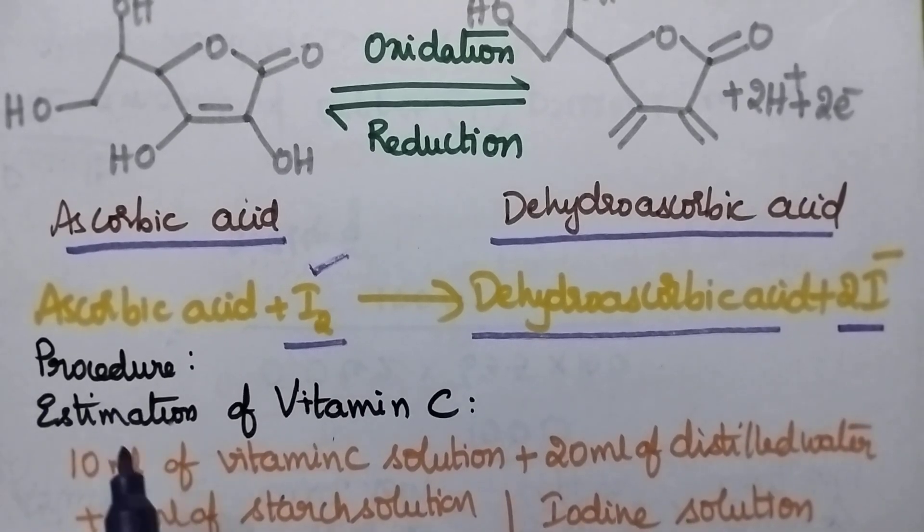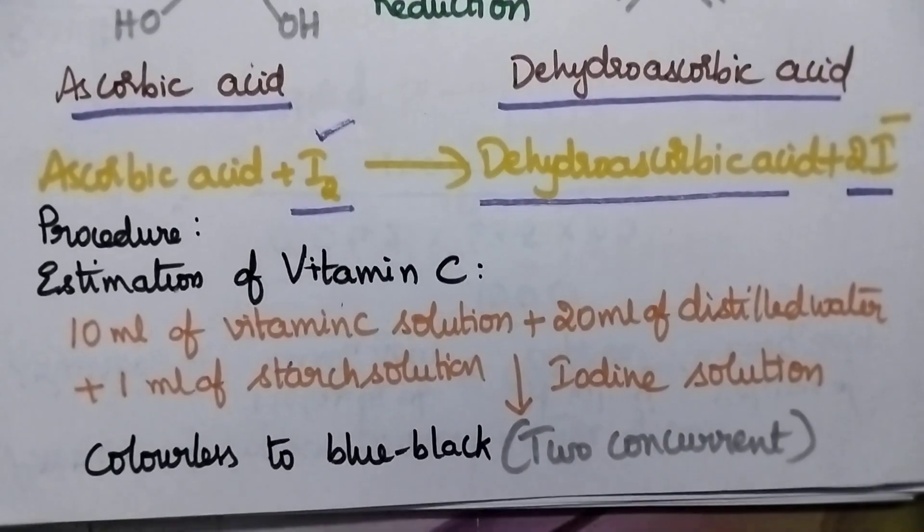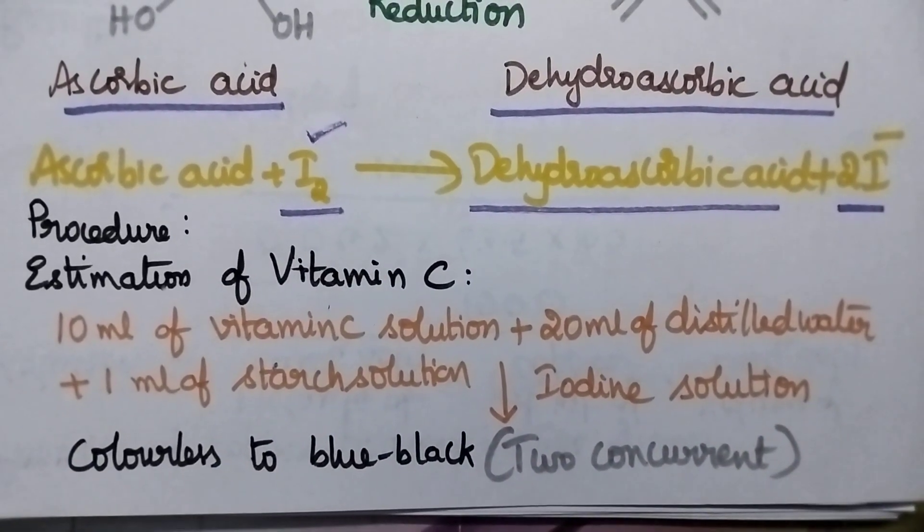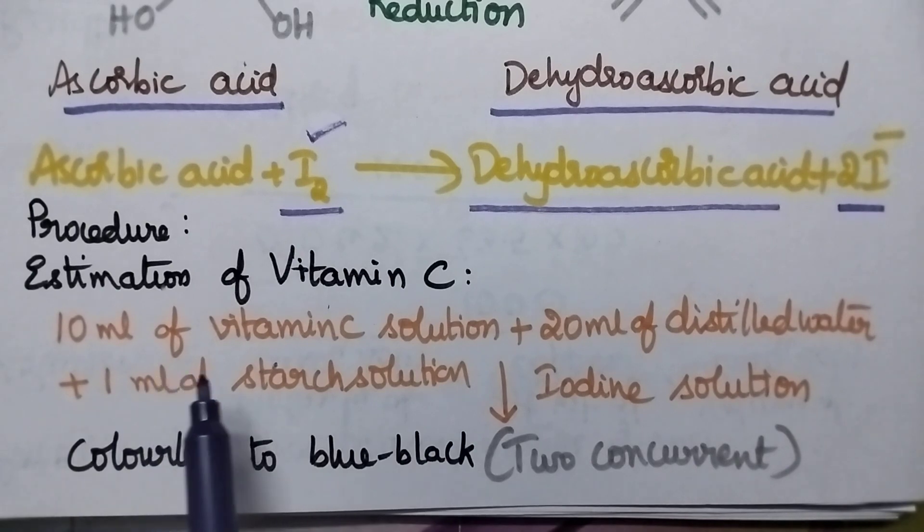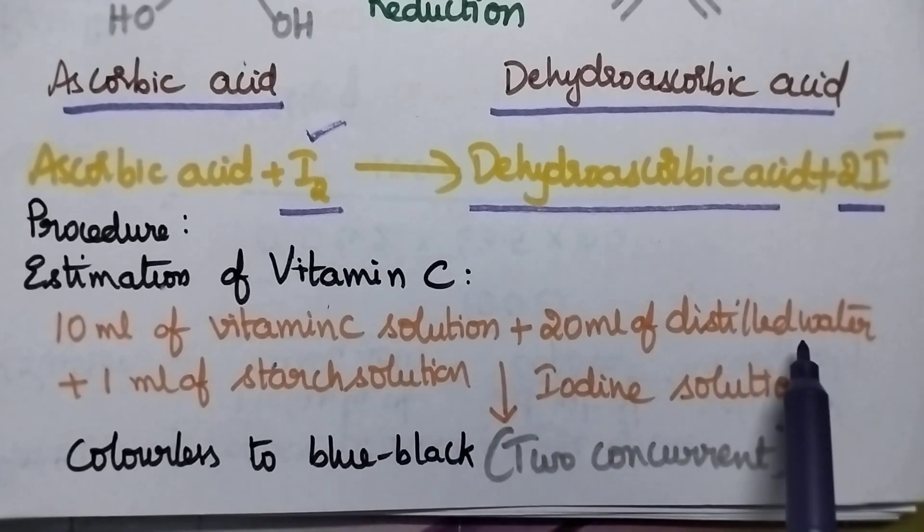Coming to the procedure, it involves one step: estimation of vitamin C. During the estimation, 10 ml of vitamin C solution is transferred into a conical flask with 20 ml of distilled water.